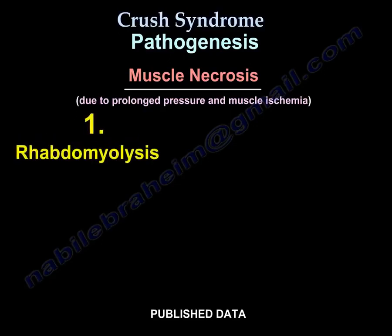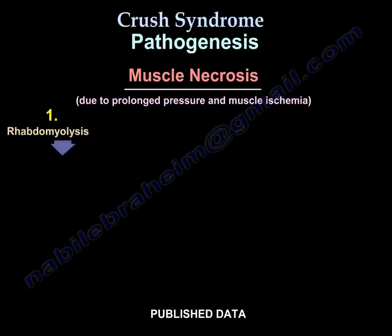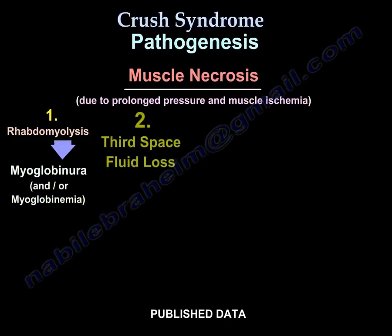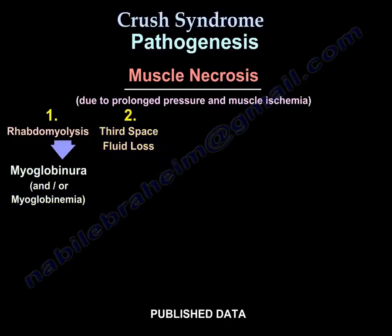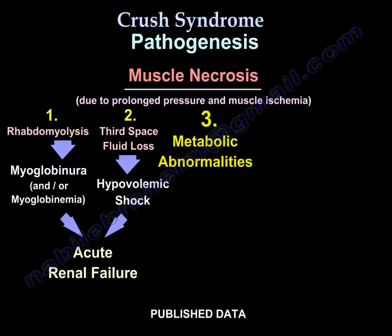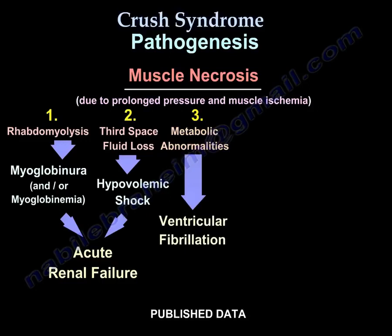Number one, rhabdomyolysis, which leads to myoglobinuria and/or myoglobinemia. Number two, third space fluid loss, which leads to hypovolemic shock. Both myoglobinuria and hypovolemic shock will lead to acute renal failure. Number three, metabolic abnormalities that will lead to ventricular fibrillation.